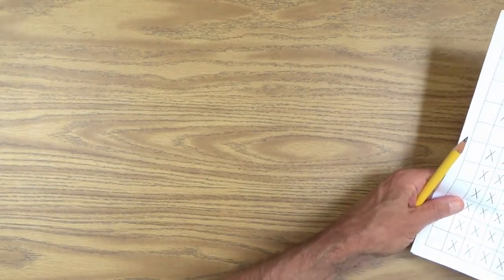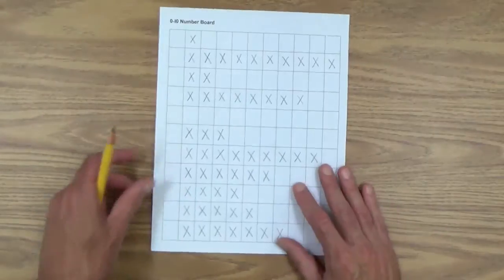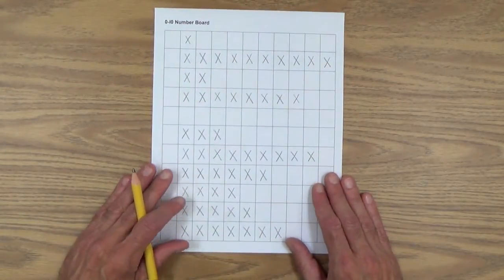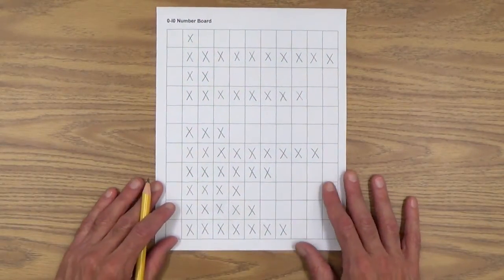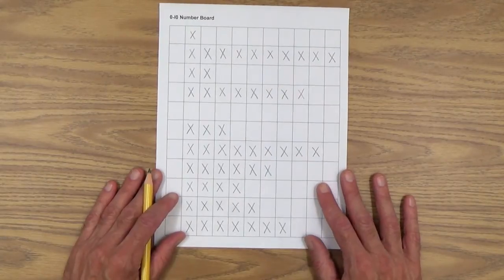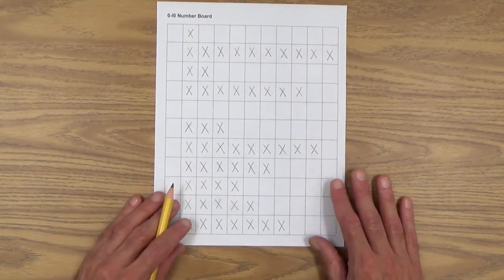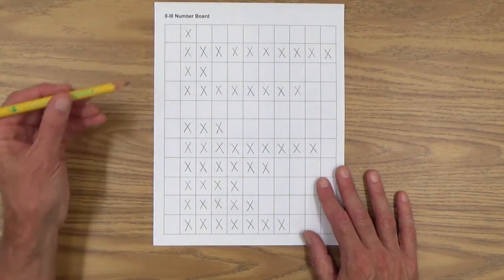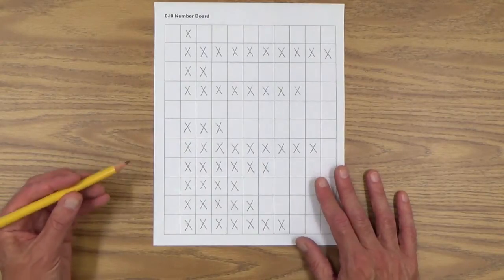And finally, here's a zero to 10 number board that has all the X's, but not the numbers. And I call this the number board reversed. So now your child will be counting the X's and writing the numbers, a very different kind of task.